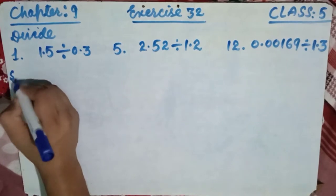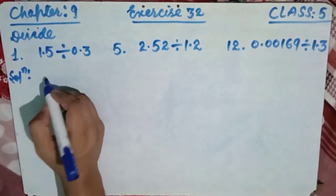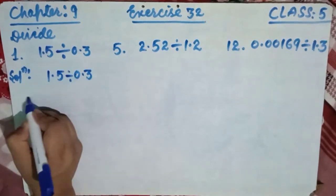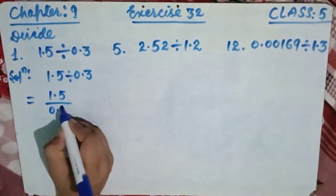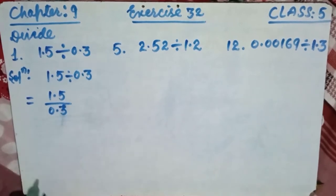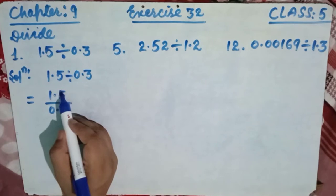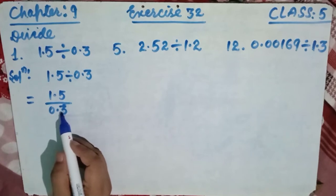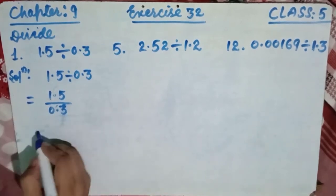Question number 1: solve 1.5 divided by 0.3. First, write it as a fraction: 1.5 over 0.3. Now look — after the decimal there is one digit in the numerator, and after the decimal there is also one digit in the denominator.